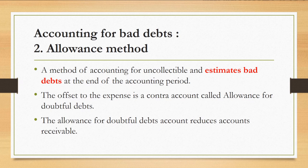The second method is the allowance method — a method of accounting for uncollectible receivables that estimates bad debts at the end of the accounting period. The offset to the expense is a contra account called allowance for doubtful debts. The allowance for doubtful debts account reduces account receivable.